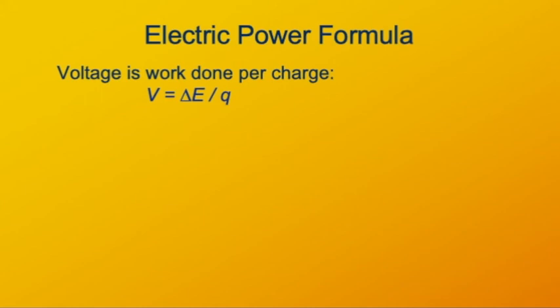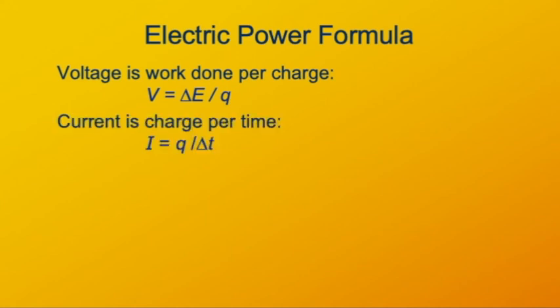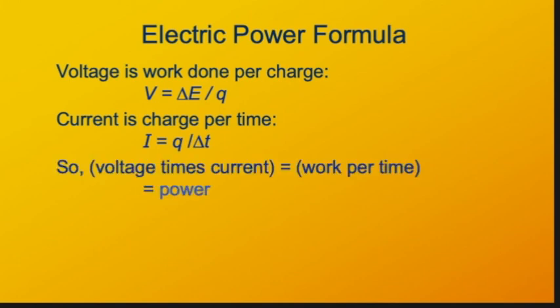What we've talked about so far is voltage. That's the work done on the charges per unit of charge, so energy per charge. And we've talked about current, which is how many charges flow per unit time. And then when you multiply these two together, the voltage times the current work per charge times charge per time, the charges cancel out and you have work per time. That's power. So if you want to know the power that's dissipated in a resistor, well, that's just the voltage across the resistor times the current through the resistor.